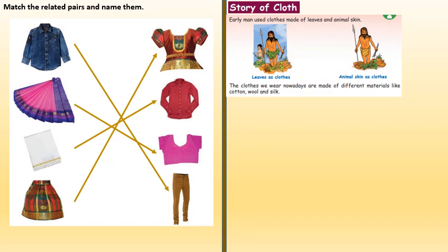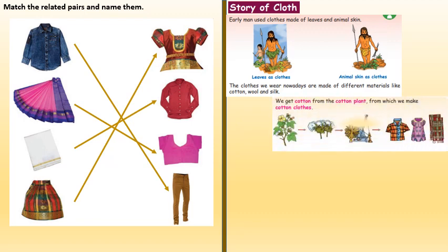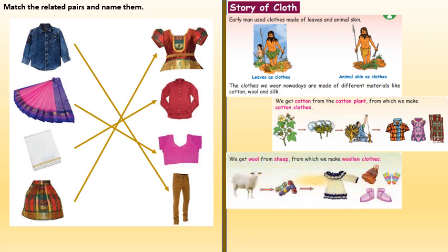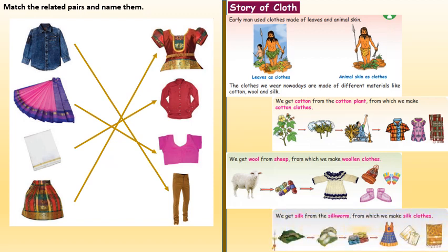Story of clothes. Early man used clothes made out of leaves and animal skin. The clothes we wear nowadays are made of different materials like cotton, wool and silk. We get cotton from the cotton plant, wool from sheep, and silk from silkworm, from which we make cotton, woolen and silk clothes respectively.